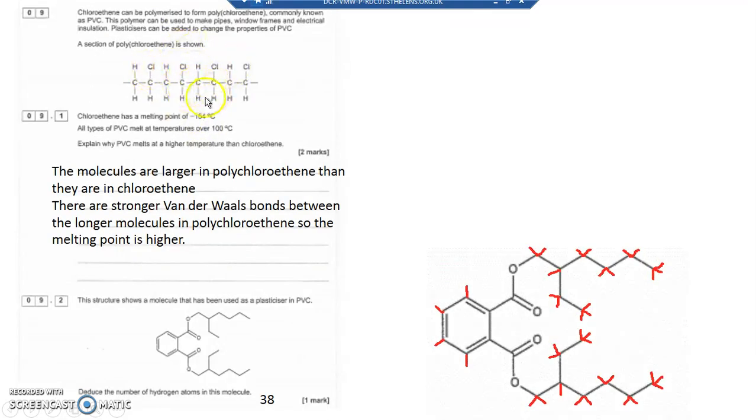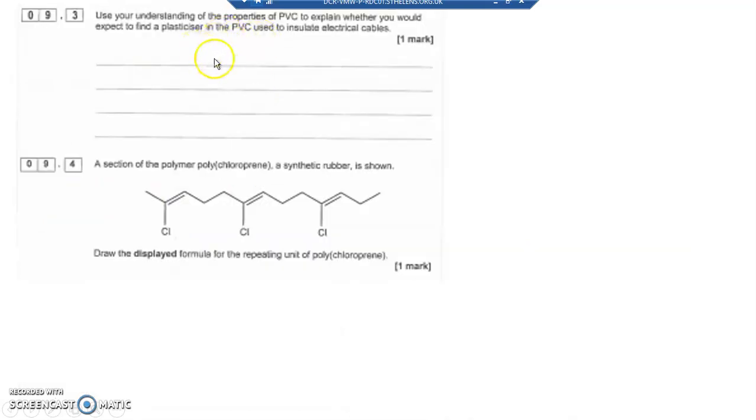And prevents—or at least weakens—the van der Waals bonds between the molecules. So what it does is it makes it more flexible, it makes it bendy. So would you expect that plasticizer to be used in insulated electrical cables? Yes. Plasticizers are used to soften molecules. The plasticizer is present in the plastic insulation to make it bendy.